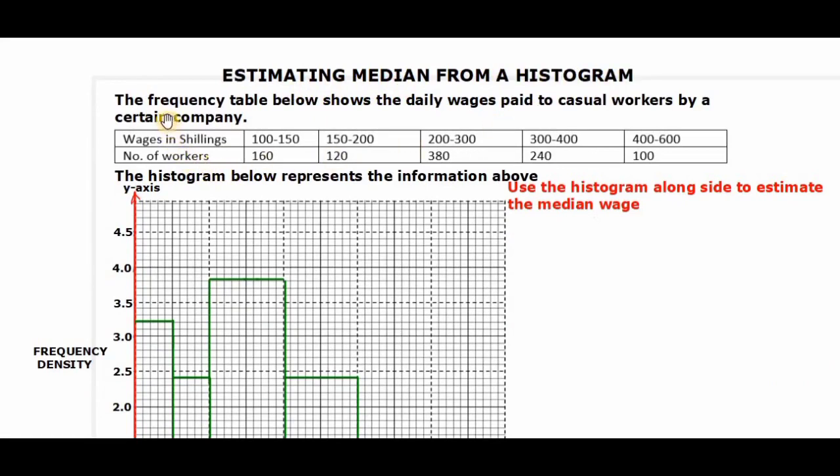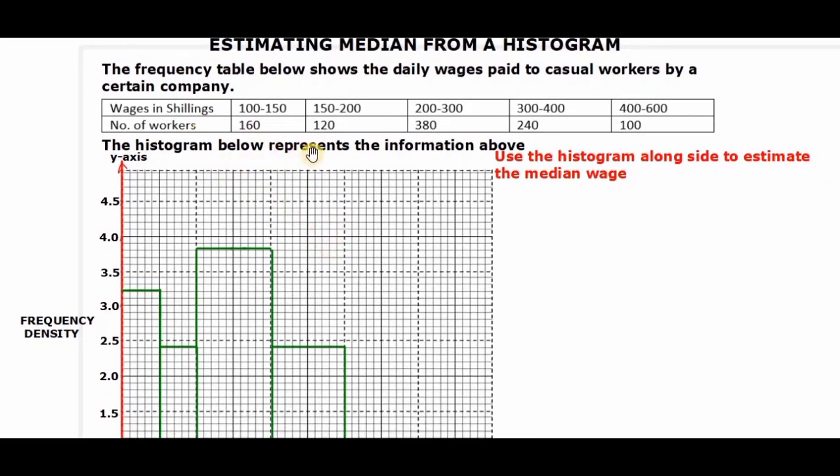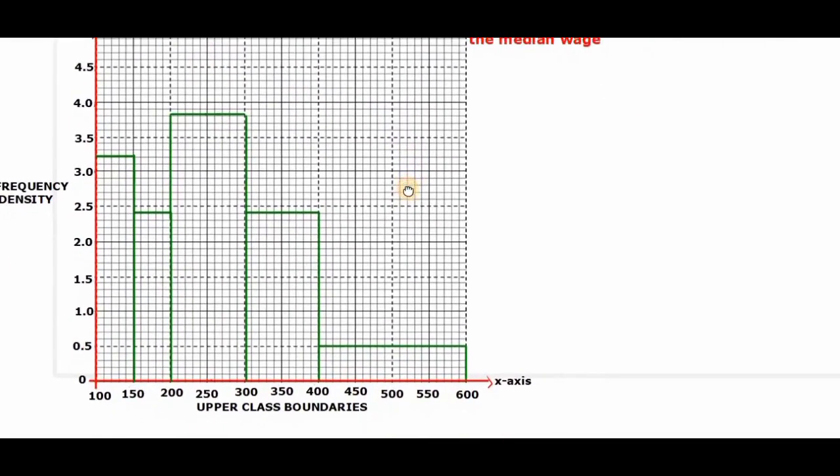So the question we have here reads, the frequency table below shows the daily wages paid to casual workers by a certain company. So we have that table. And then the histogram below represents the information above.